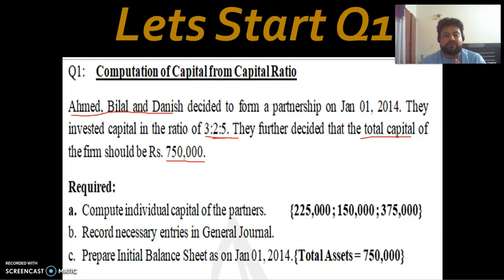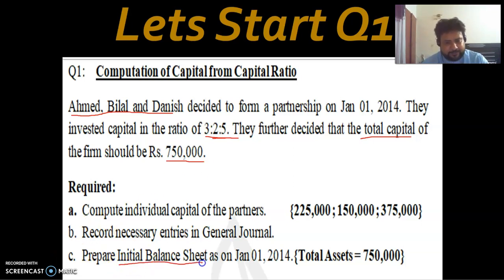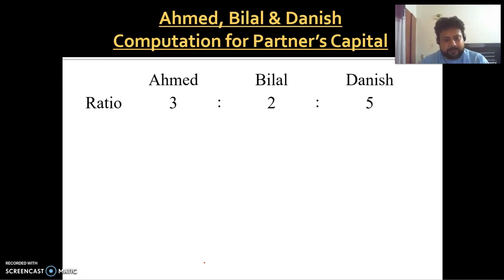The first part is to compute the individual capital of each partner. Ahmed's share is 3 out of 10, Bilal's share is 2 out of 10, and Danish's share is 5 out of 10. The total capital is Rs. 7,50,000. Ahmed's capital is 3/10 × 7,50,000 = Rs. 2,25,000. Bilal's capital is 2/10 × 7,50,000 = Rs. 1,50,000. Danish's capital is 5/10 × 7,50,000 = Rs. 3,75,000. Summing these gives 7,50,000, confirming the distribution.